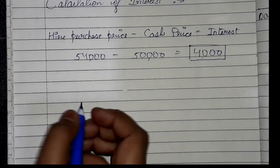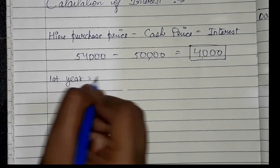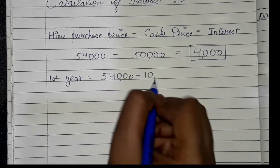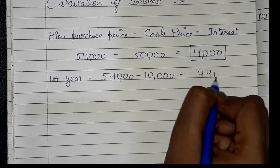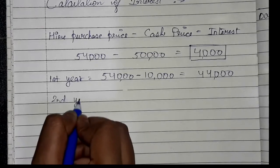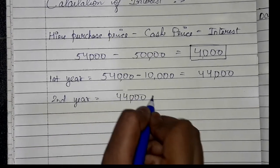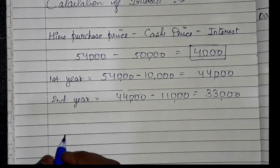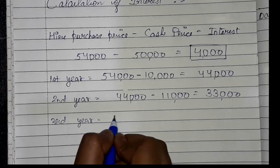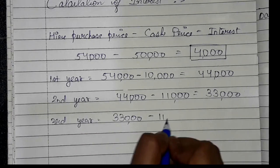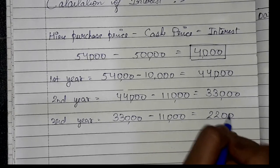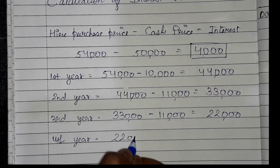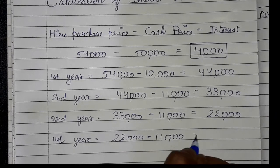First we see how much cash is outstanding each year. In year 1, total installment is 54,000 and down payment was 10,000, so we give 44,000. Year 2: 44,000 minus 11,000 = 33,000. Year 3: 33,000 minus 11,000 = 22,000. Year 4: 22,000 minus 11,000 = 11,000.